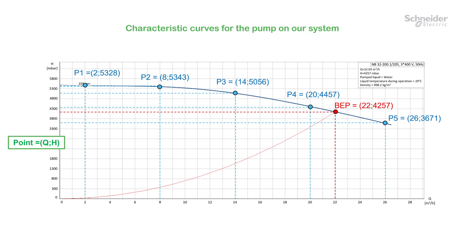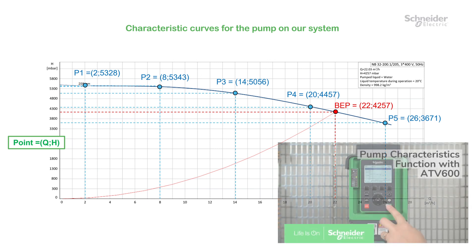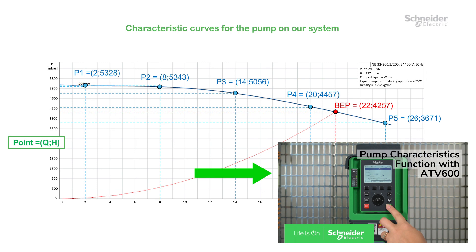Pump characteristic curves must have been programmed for the flow estimation function to be active. Before starting the flow estimation function configuration, you must program the characteristic curves for each pump in the system on the associated drive. Please refer to the video about pump characteristic curves, FAQ000247033.